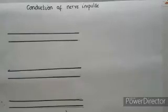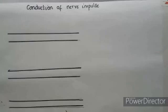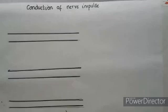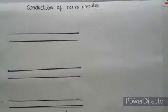Hello students, hope all of you are thorough with the last concept I taught — the basic terms in connection with the conduction of nerve impulse or nervous activity. Now let us start learning about the conduction of nerve impulse. As I taught in the previous video, an impulse is nothing but a wave of irritability or a wave of disturbance that sweeps over the nerve cell. Here you can find I have drawn the axon of the nerve cell.